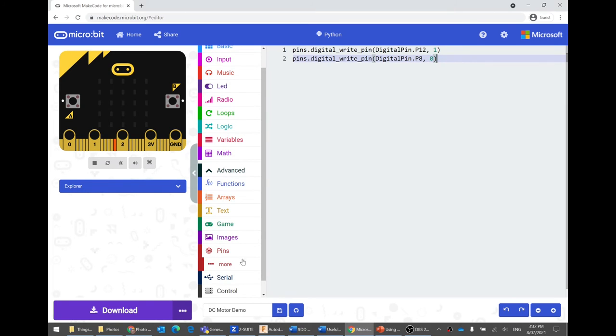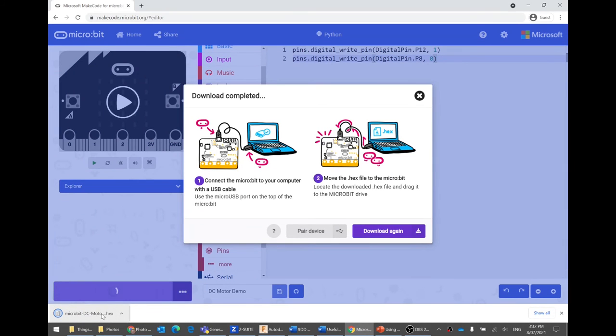Now to do that, there are a few ways. If you press download, then it will give you the hex file. And you can follow these instructions to put that hex file on your micro bit. However, what you can do is you can pair the device instead.